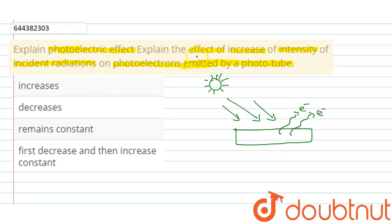The question says explain the effect of increasing the intensity of incident radiation. As we know, this is the incident radiation. When we increase this radiation, we know that the emission of electrons must increase from the metal surface when we increase the incident radiation. So here the option is correct. When we increase the intensity of incident radiation on photoelectrons emitted by a photo tube, the emission of electrons will be increasing.